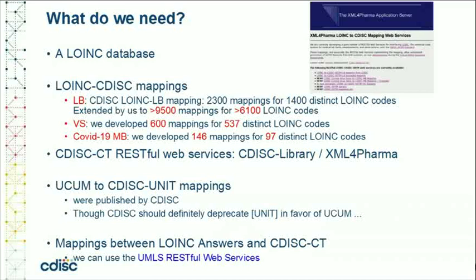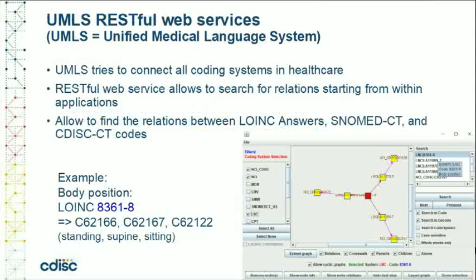We made all of these available as a set of RESTful web services. We will also need additional mappings between LOINC answers and CDISC-CT, which we can get from the UMLS RESTful web services from the National Library of Medicine. This allows us to find the relations between LOINC answers, SNOMED CT, and CDISC-controlled terminology.